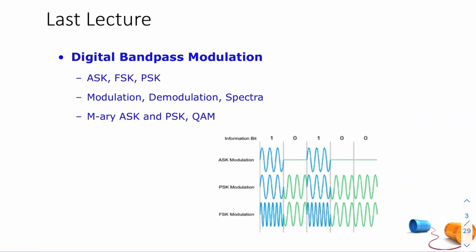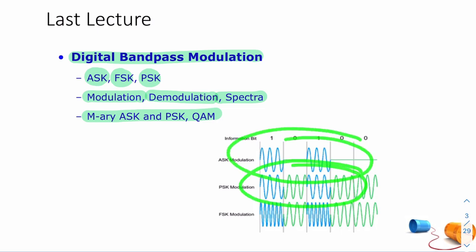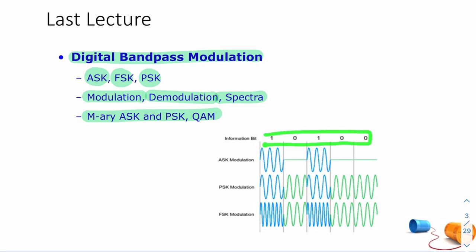So a quick recap. In lecture 11, we spoke about digital bandpass modulation — that's basically amplitude modulation, frequency modulation, and phase modulation. We spoke about how to generate it, how to detect it, and a little bit about what the frequency domain representation looks like. We spoke about different variants of these. In essence, it's just the same as AM, FM, and PM that we're familiar with. The only difference is that the information, instead of being an analogue signal, is a line code generated from a digital signal.